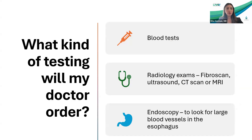What kind of testing will your doctor do if there's any suspicion of liver disease? First, they're going to order some blood tests to look at liver function, kidney function, sodium levels in the blood, platelet counts, white blood cell counts, hemoglobin, and other things. They will probably also do a radiological exam — sometimes a fibroscan, which tests how much scar tissue and fat is in the liver. Additionally, they may do an ultrasound, CT scan, or MRI depending on the concerns. We might also do an endoscopy, called an EGD, to look for those big blood vessels in the esophagus if there's suspicion of cirrhosis.